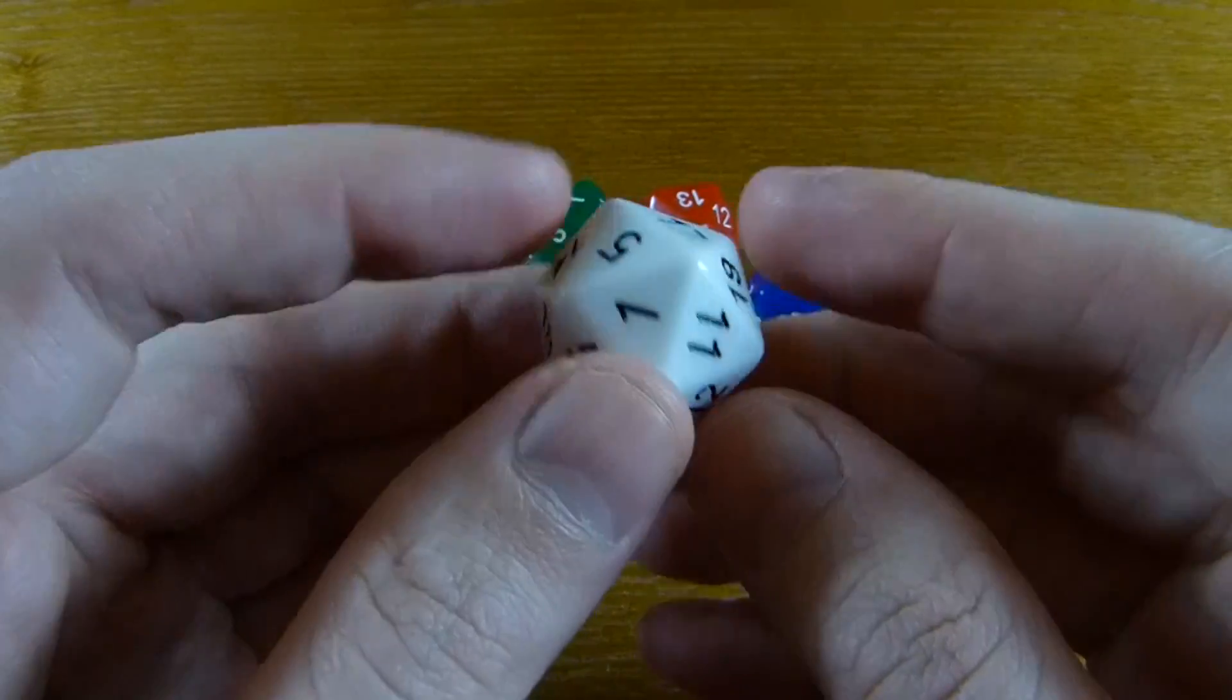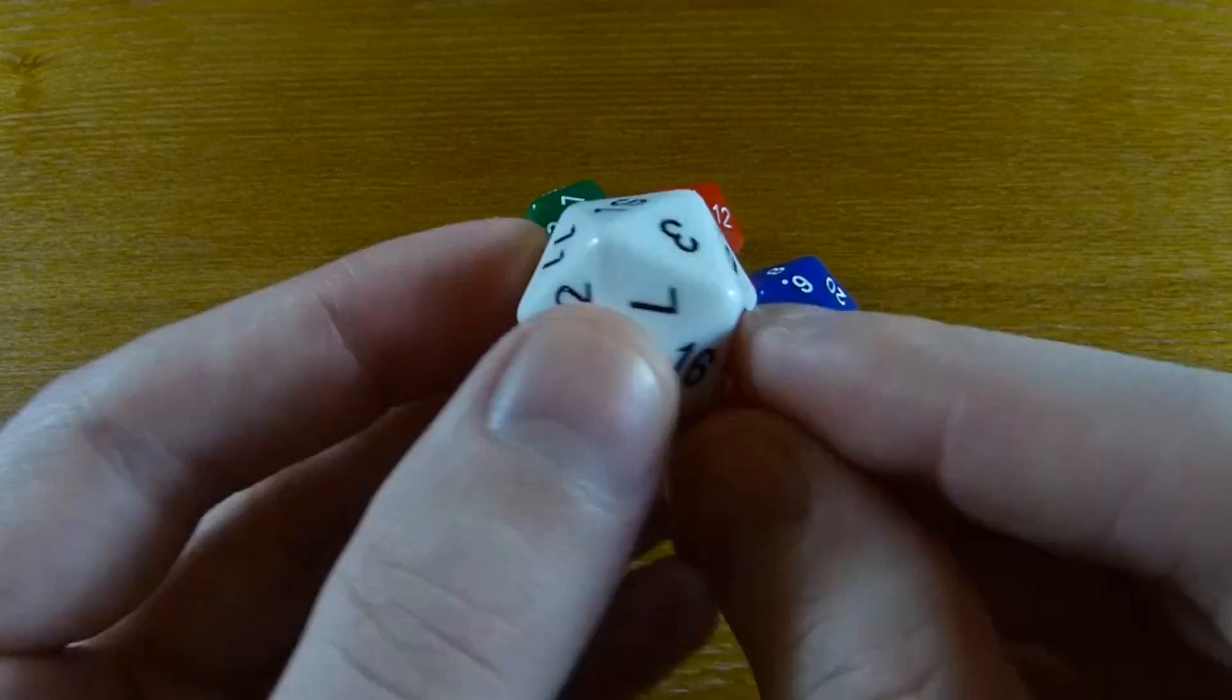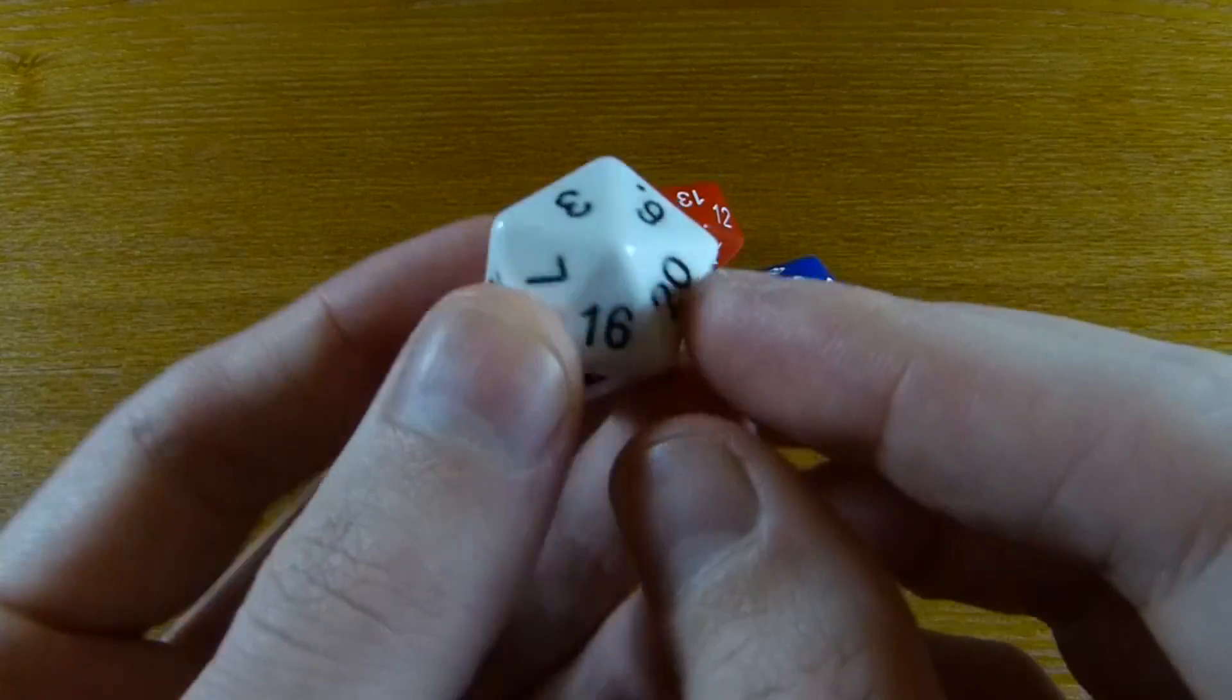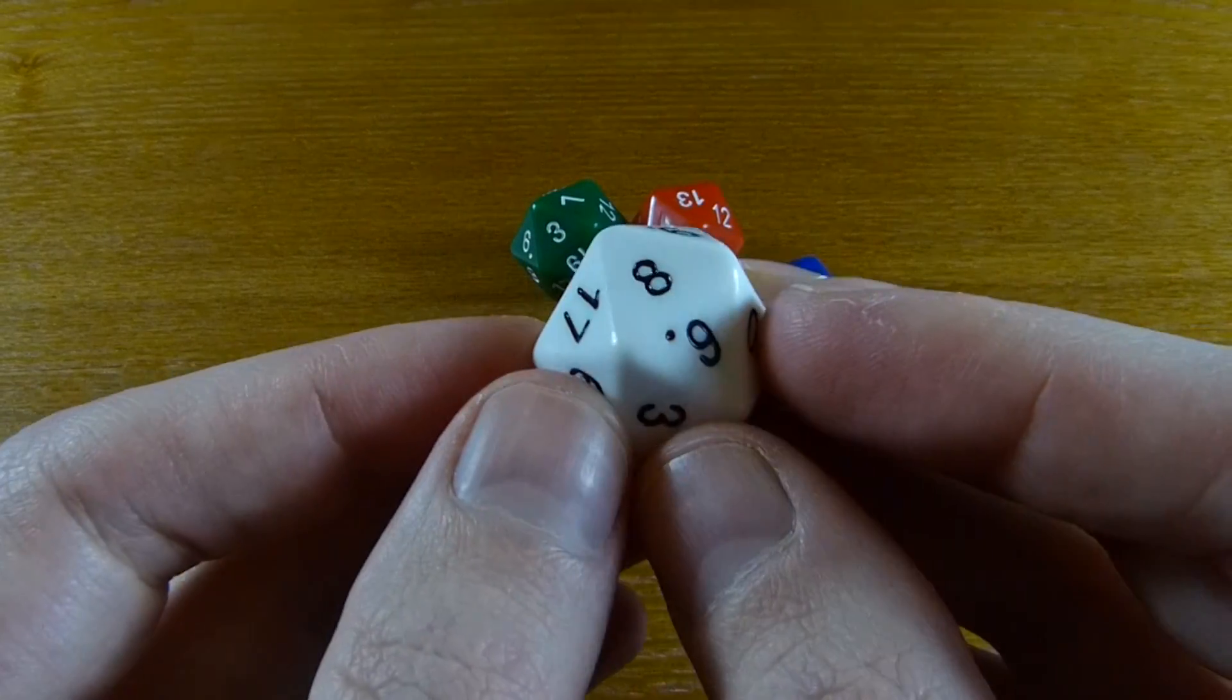For almost any d20 you're going to see, they follow the opposite sides add up to 21 rule. And in general, any dice that you see, the opposite sides are going to add up to one more than the number of sides.